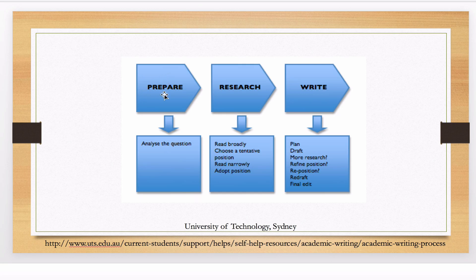From the university of technology in Sydney. I thought this was quite relevant — in preparation, think about the question: what are you trying to address in your literature review? With regards to research, initially you have to read very broadly, choose a tentative position or plan, and as you get to grips with your area you start to read more narrowly and adopt your position. You have your plan about how you're going to structure the report. You know what you really want to stress as the key points. So you start planning and drafting, you might have to go back to do more research, possibly change your opinion, then redraft and do a final edit. Make sure that you proofread and do any final edits before submission.